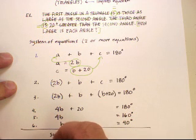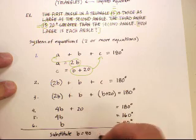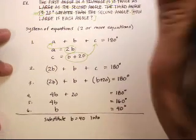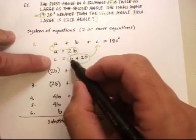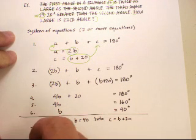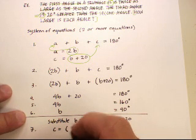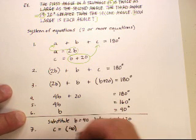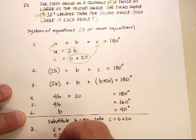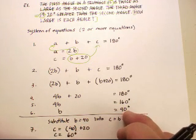Now substitute B equals 40 into an equation where I would be able to solve for another variable. In this case, it would be this one right here, into C is equal to B plus 20. So step 7 will be C is equal to B, which we know is 40 degrees, plus 20. C is equal to 60 degrees. And now I've got 2 of my variables.